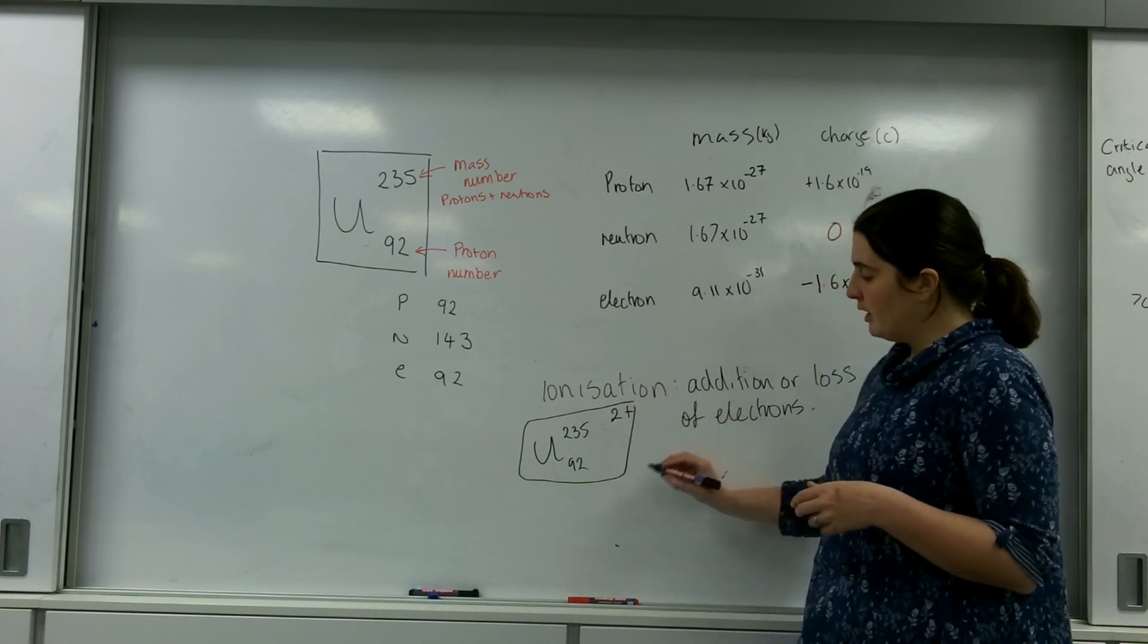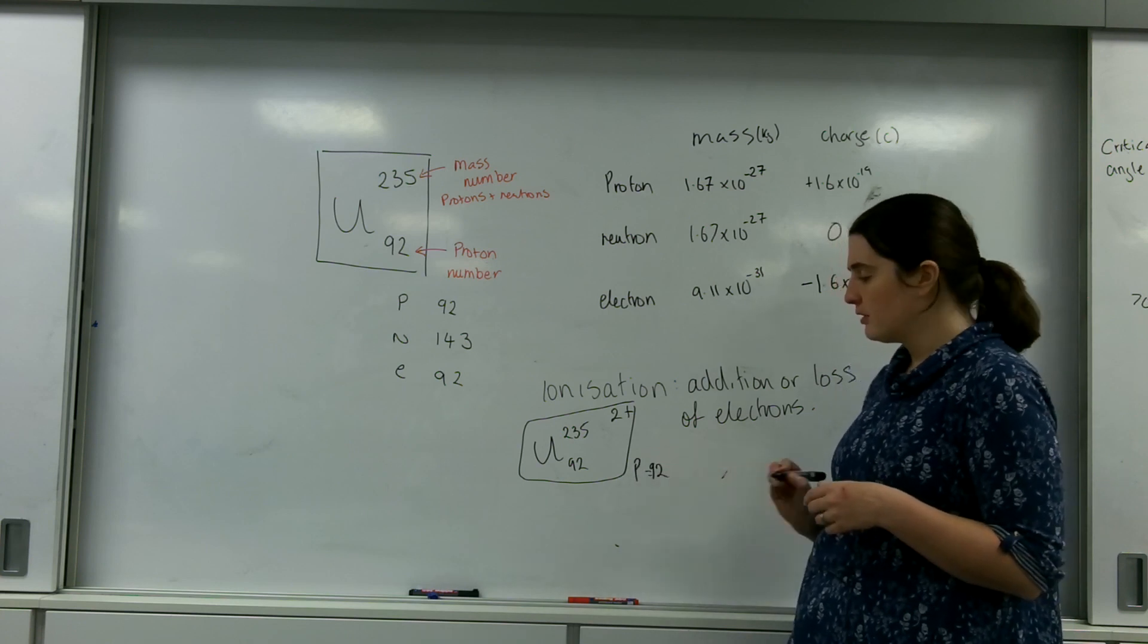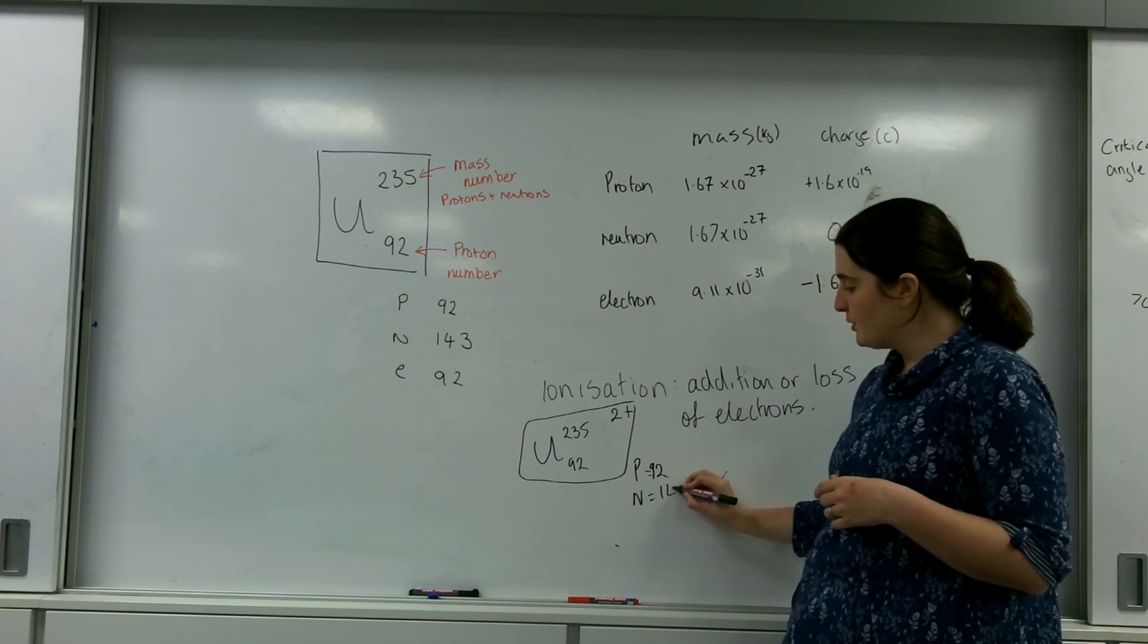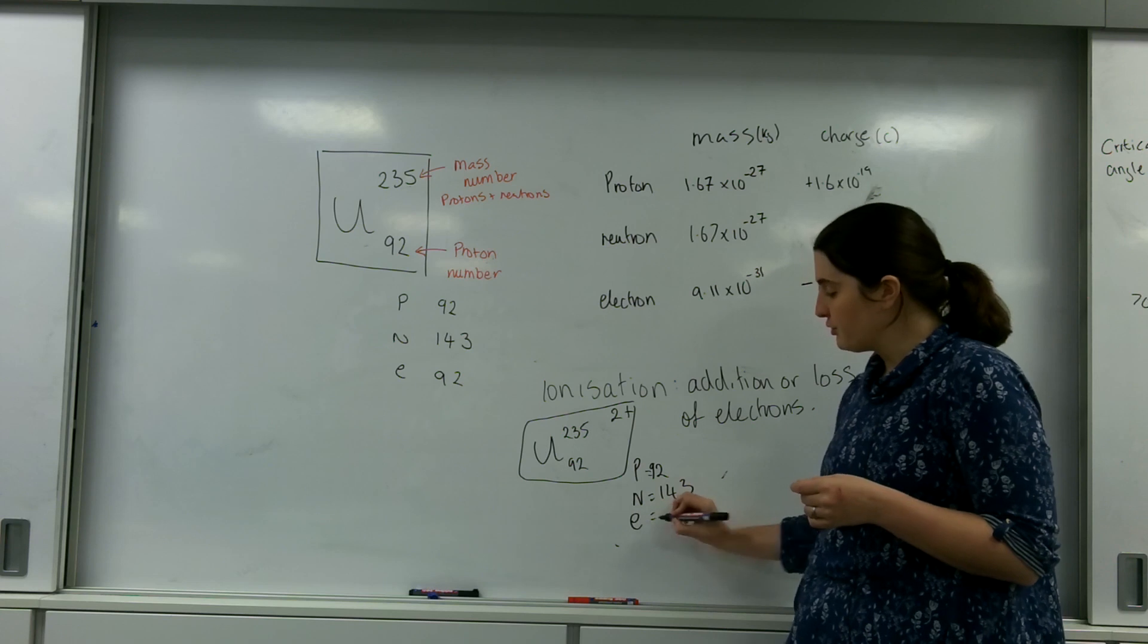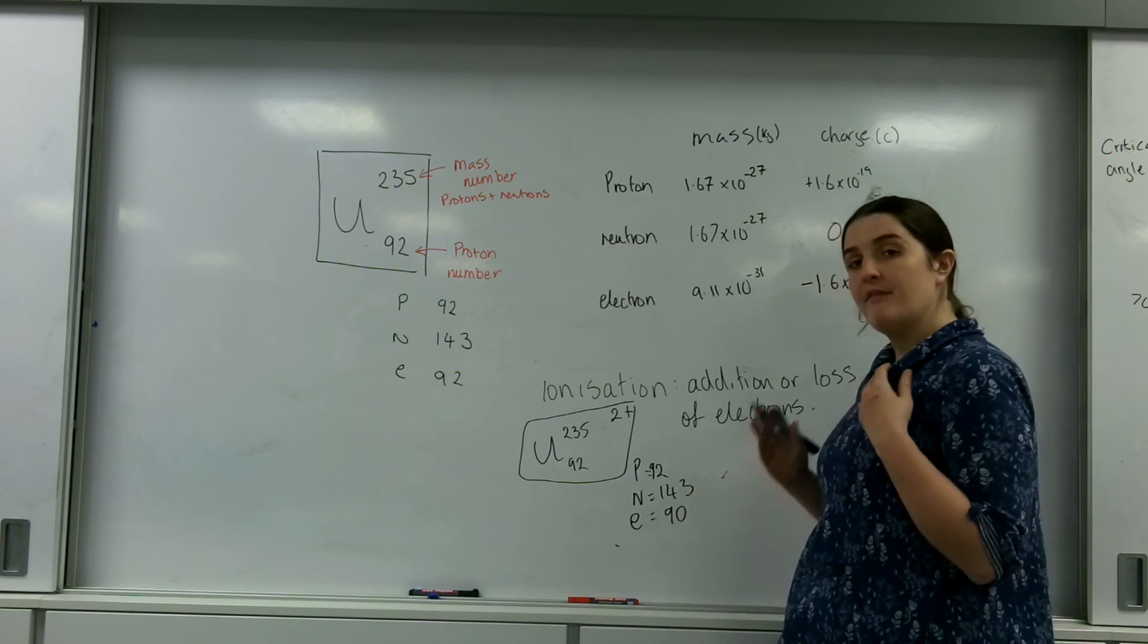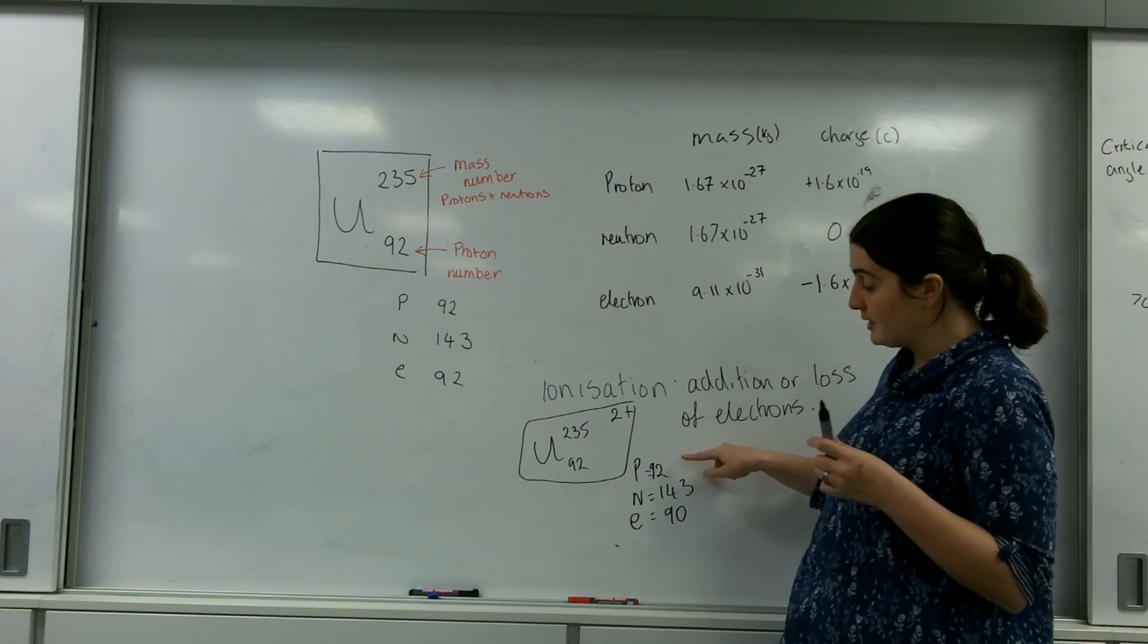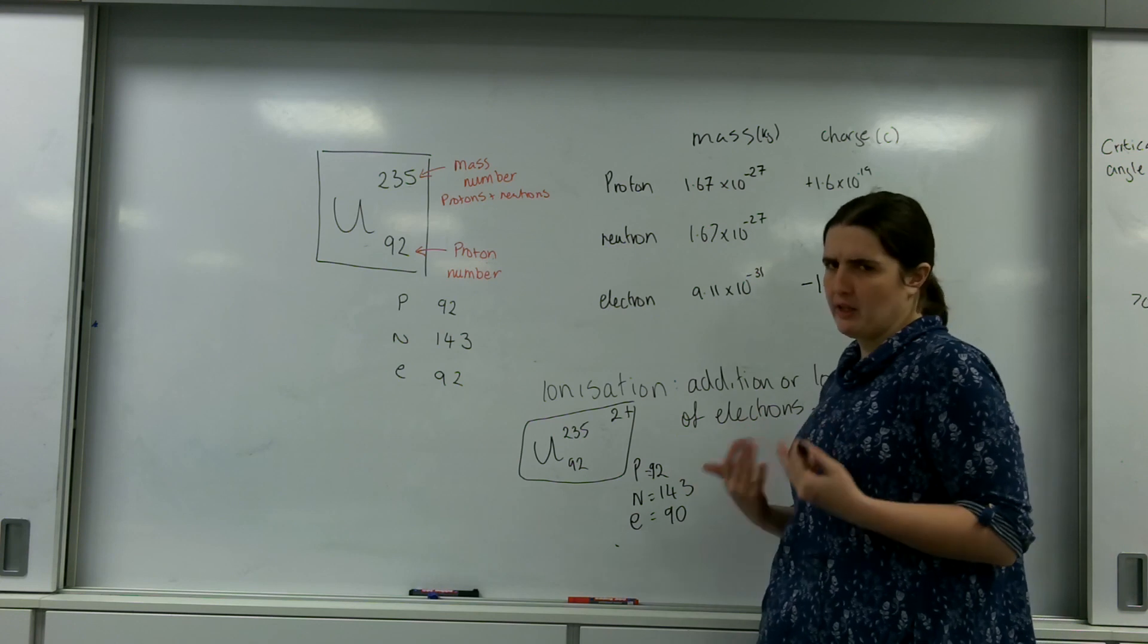How many protons do I have? I still have 92 protons. I still have 143 neutrons, but the number of electrons I have is 90, because I have lost two. I have two more positives than I do negative. And this is the process of ionization.